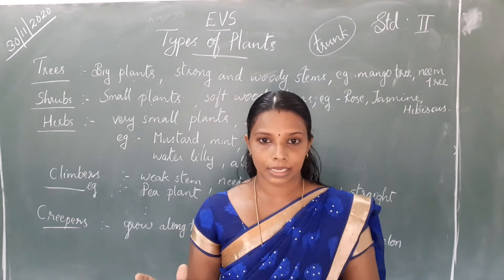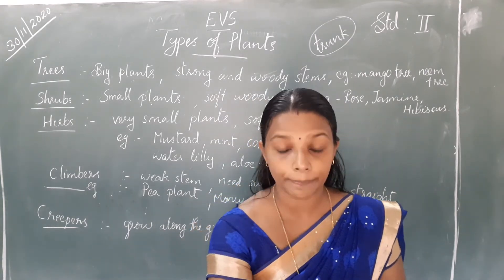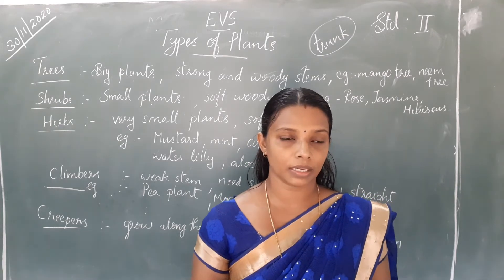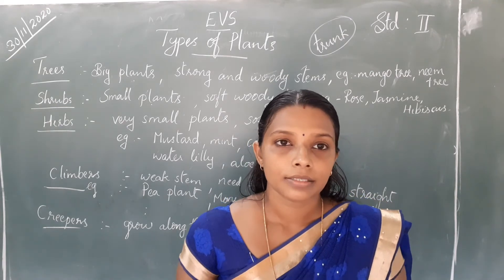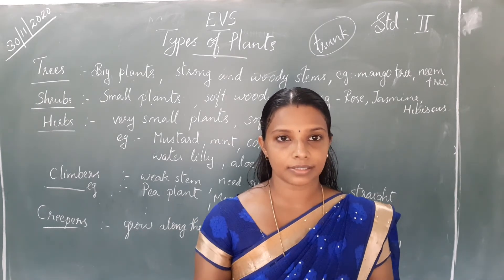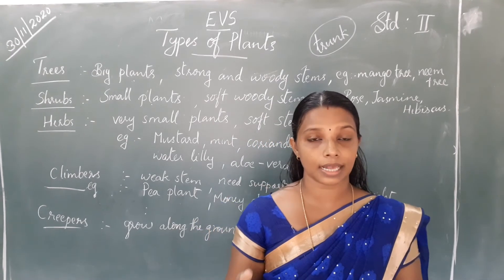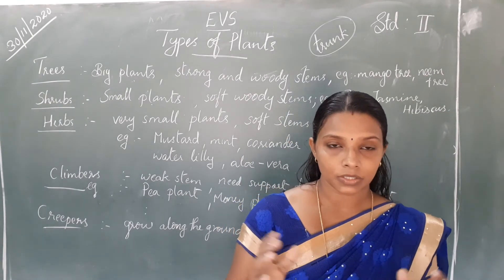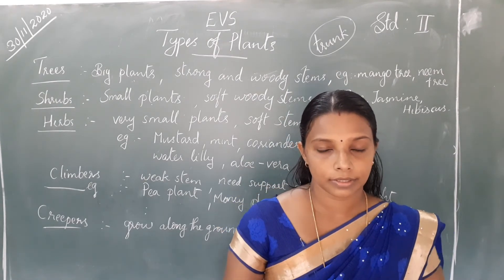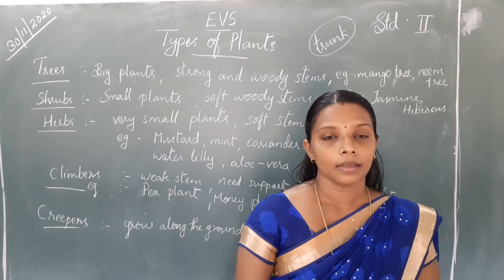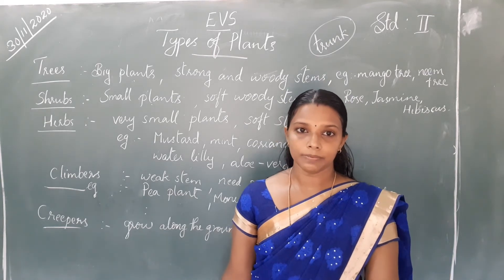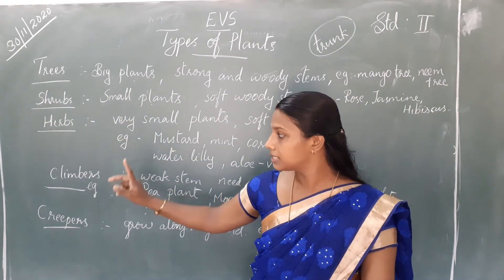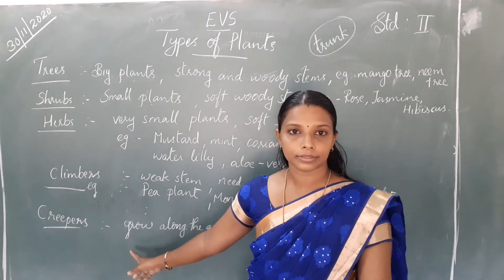We see many types of plants around us — some are very big, some are very small, and some are of different sizes. They have different sizes and different types of stems. Based on the size and shape of stems, they are classified as trees, shrubs, herbs, climbers, and creepers.